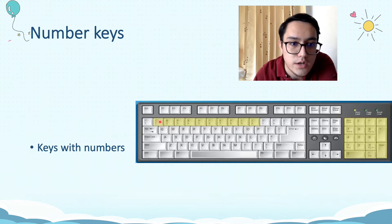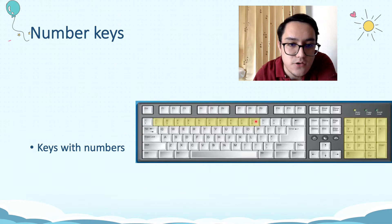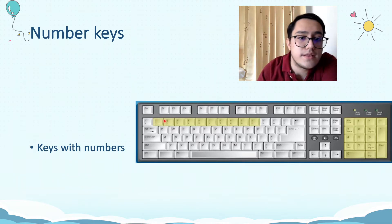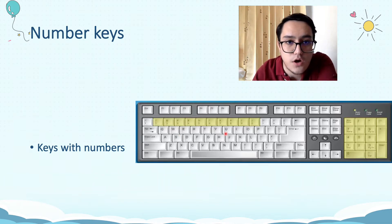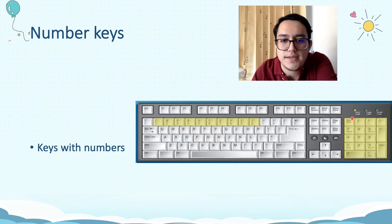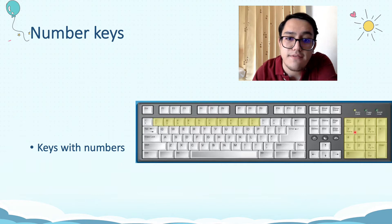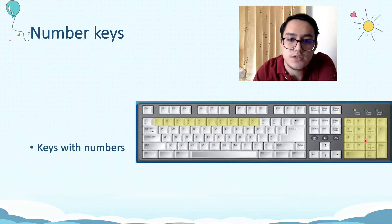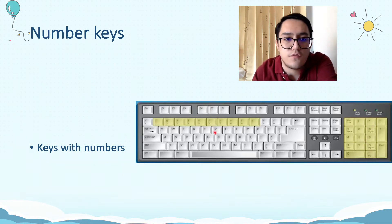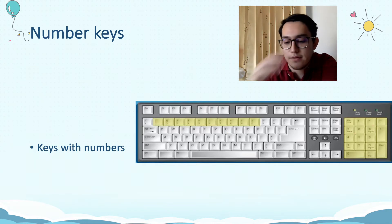You can see the number keys right on the top here. We have numbers one through nine and zero along the top row. But that's not the only keys that have numbers on them. We have another part on the right of your keyboard — right here you can see we also have zero through nine. However, not all keyboards have this. Just the bigger keyboards have this one. But for sure your keyboard will have the top row, and if you have a big keyboard, you will have the right-side numpad as well.